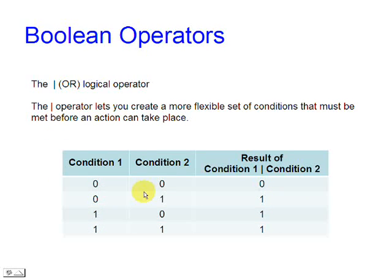The OR operator lets you create a more flexible set of conditions that must be met before an action can take place. The result is false only if both conditions are false, otherwise the result for an OR is true.